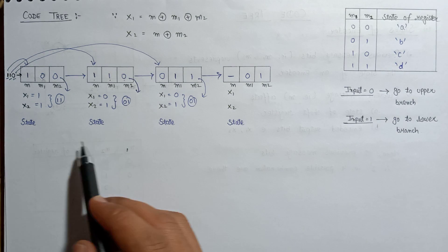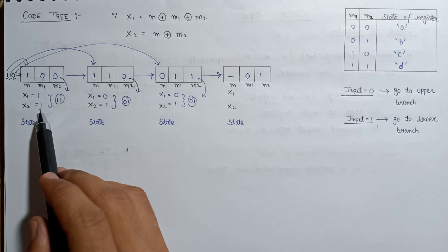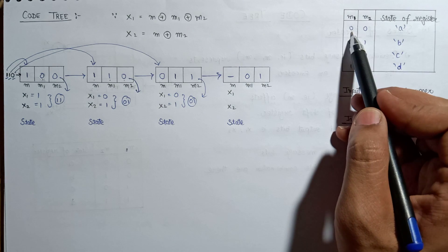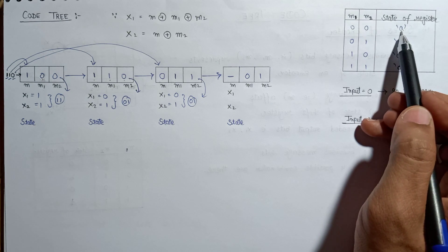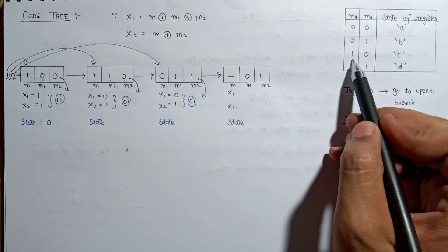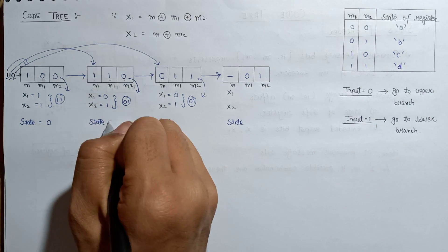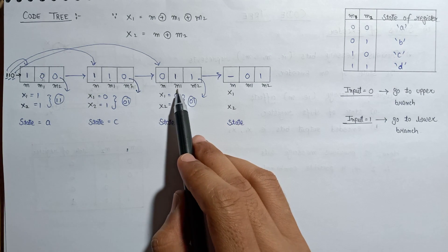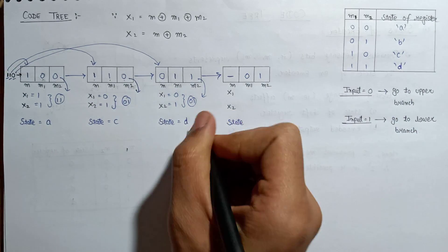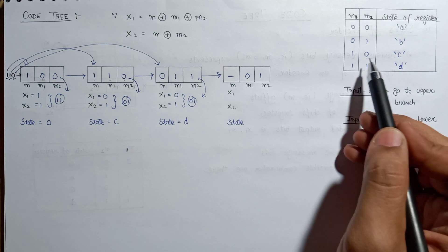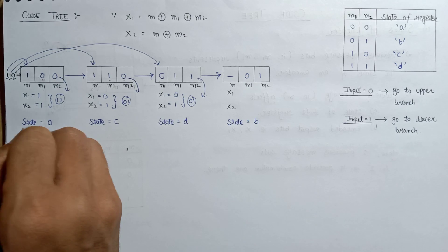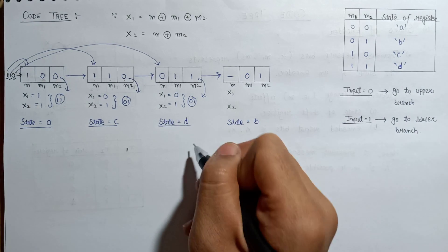Now let us evaluate the states for each step. Here m1 is 0 and m2 is 0, so from the table the state is A. Next, m1 is 1 and m2 is 0, which indicates state C. Then m1 is 1 and m2 is 1, indicating state D. Finally, m1 is 0 and m2 is 1, which indicates state B. This is how we evaluate the state based on the values of m1 and m2.